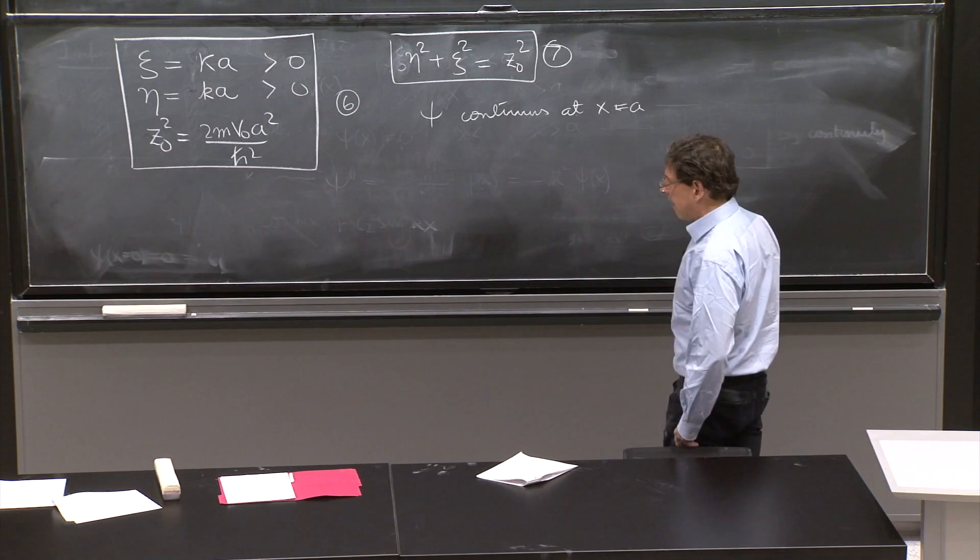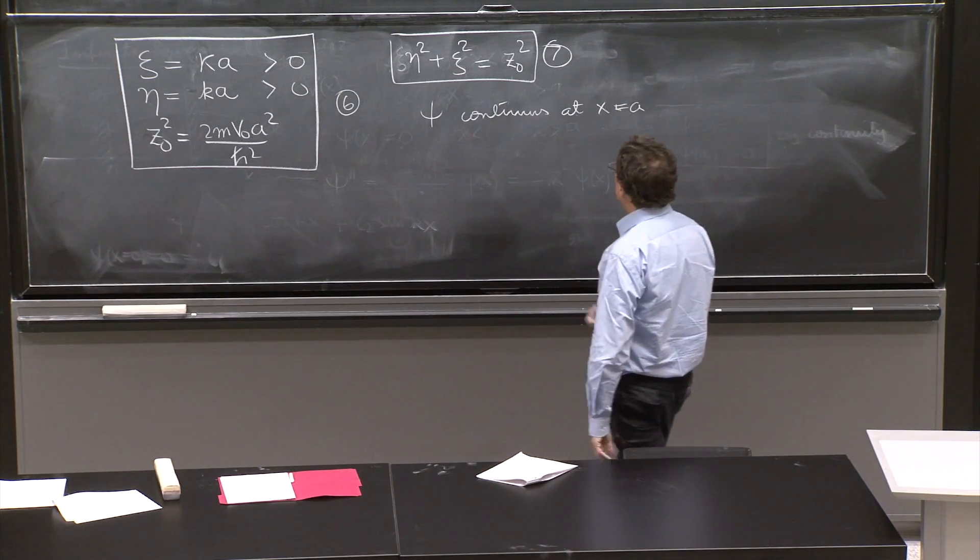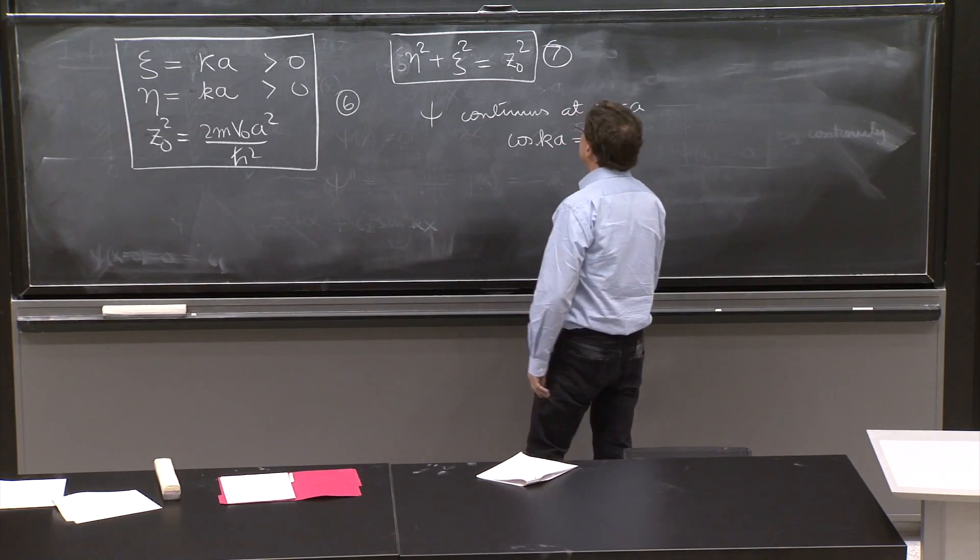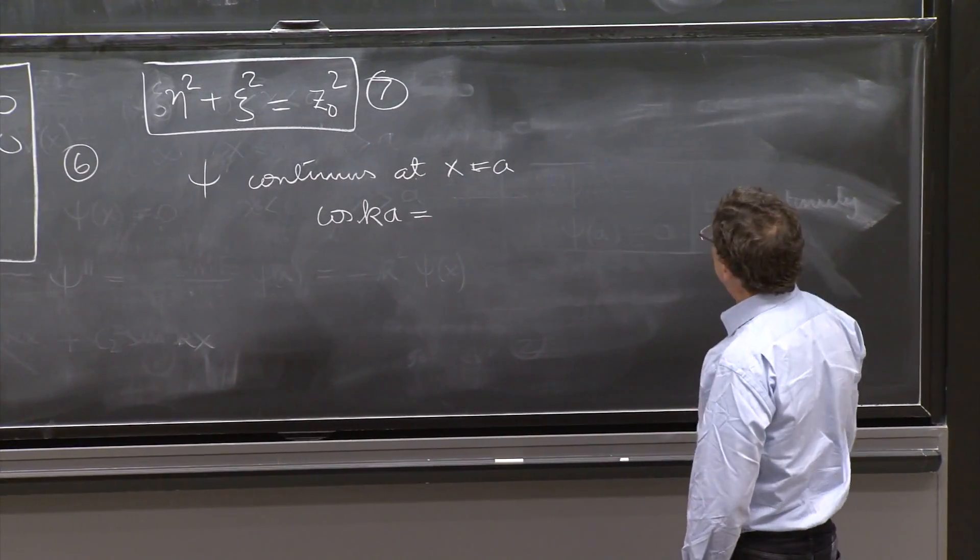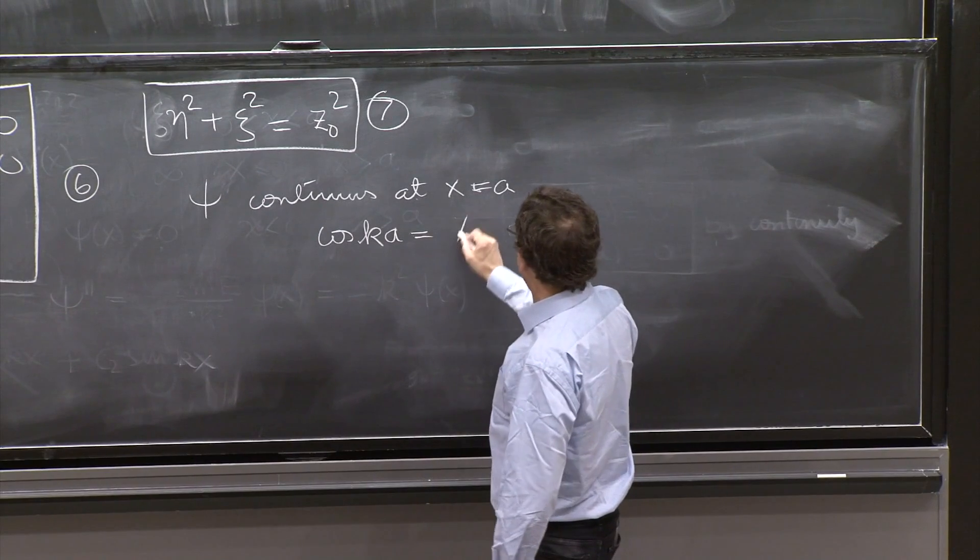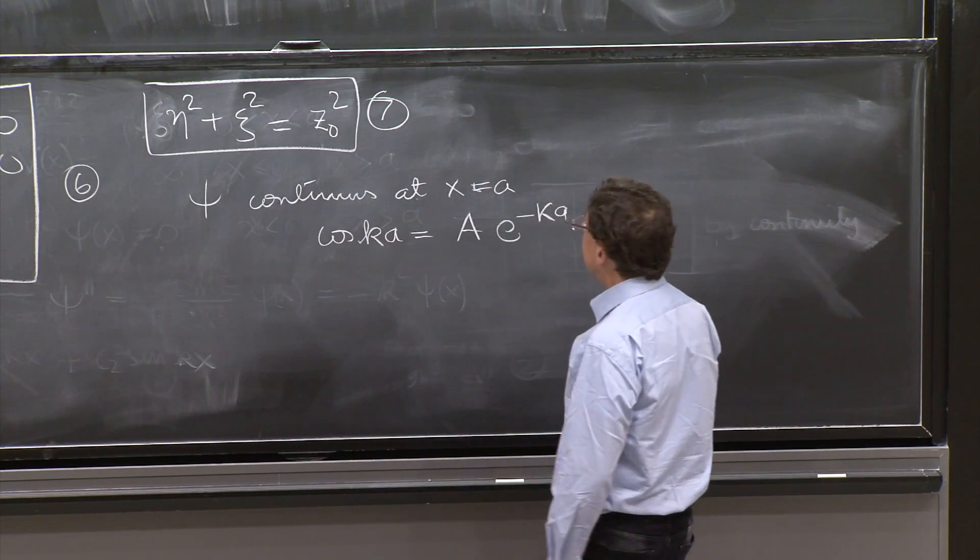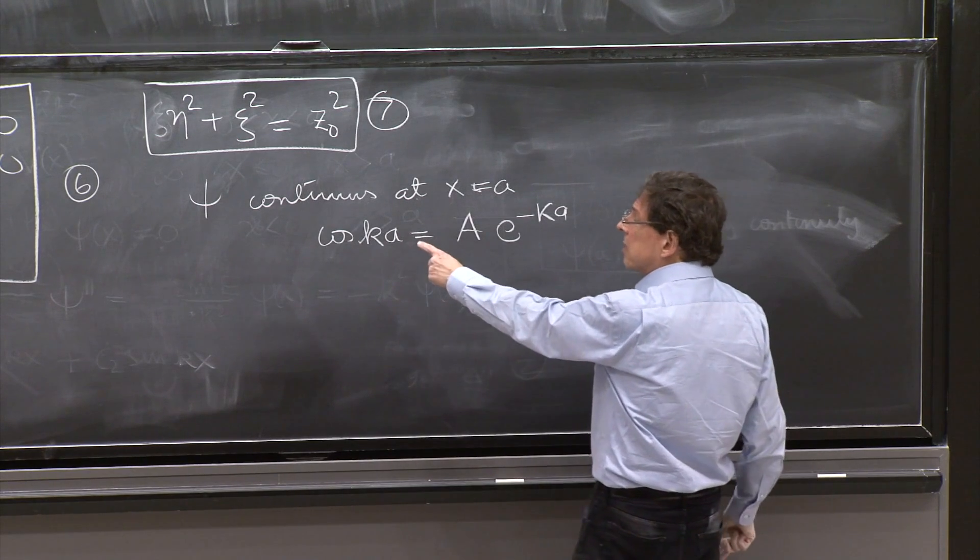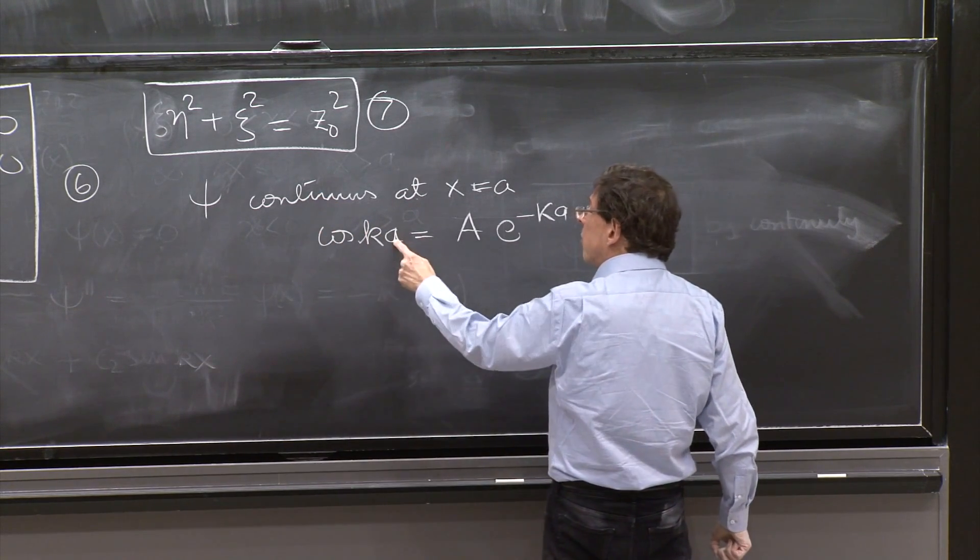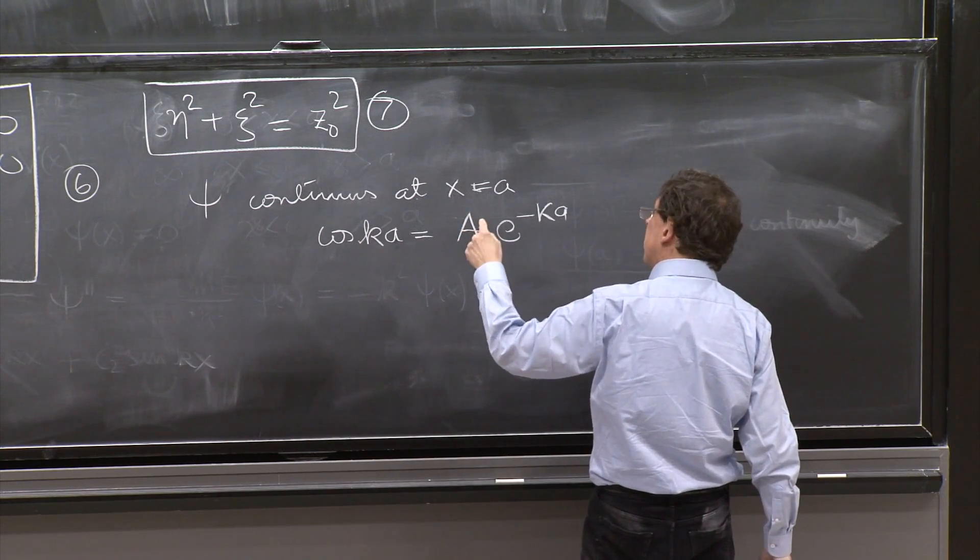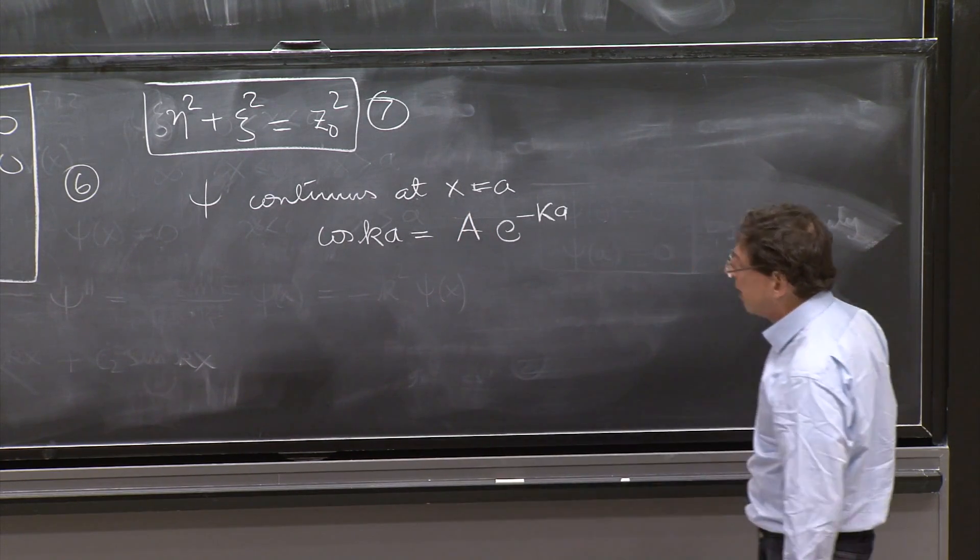And what do we have? Well, from equation 2, you have cosine of ka. And from 4, you would have a equals e to the minus ka. This is the value of this. So the interior solution at x equal a must match the value of the exterior solution at k equal a.